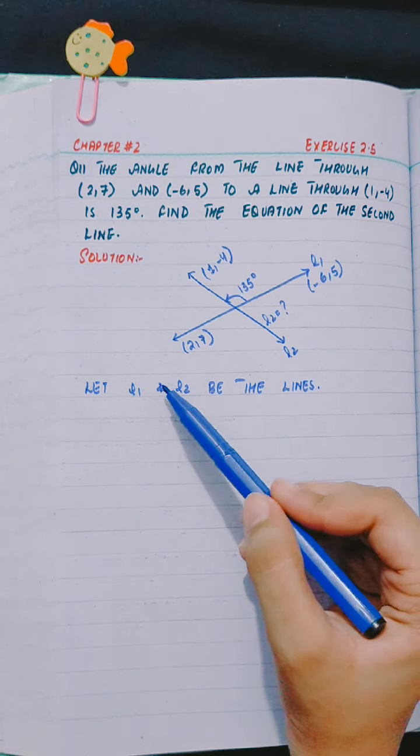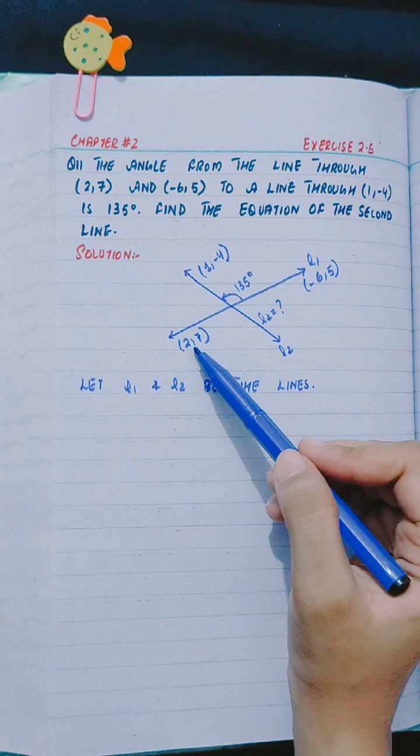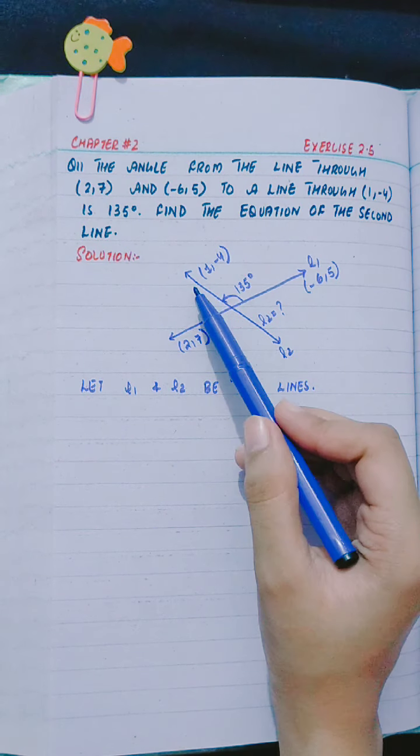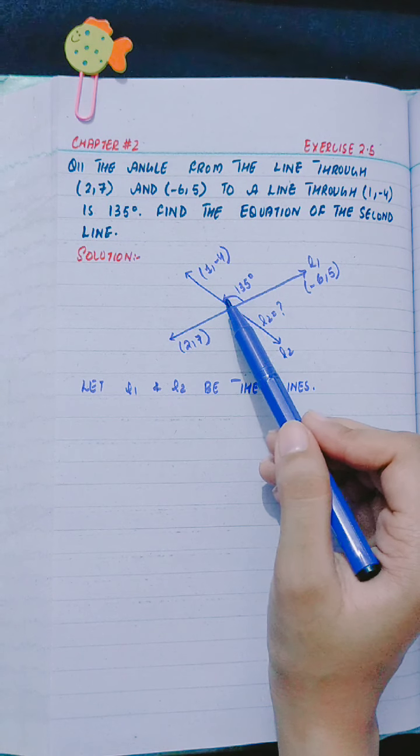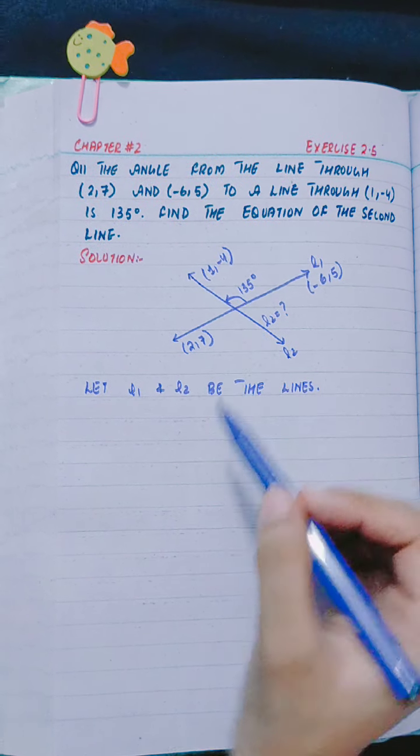Let L1 and L2 be the lines. There is a line with points (2,7) and (-6,5), and the second line with one point given as (1,-4). The angle made is 135 degrees, L1 towards L2.